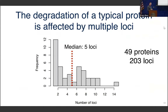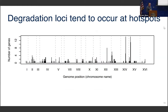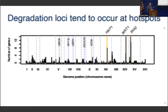We see that this individual protein is affected by eight loci across the genome influencing its degradation. That's not atypical — across these 49 proteins we have a total of 200 loci, and the median number of loci affecting them is five. Again, quite a bit of genetic complexity. Nearly all of this is trans-acting. These loci also tend to pile up at hotspot positions, which we can look at in a histogram-style plot of the genome.